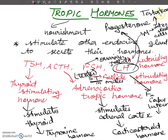This is all about tropic hormones. These tropic hormones are secreted from the anterior lobe of the pituitary. All the hormones of the anterior lobe can be remembered as FLAT PG — FSH, LH, ACTH, TSH, Prolactin, and Growth hormone.